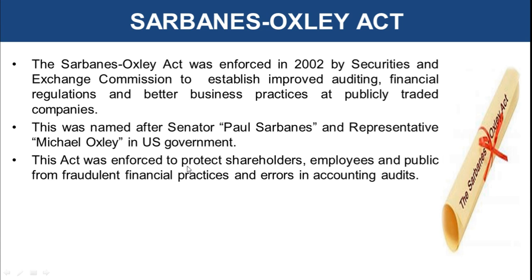This act was enforced to protect shareholders, employees, and the public from fraudulent financial practices and errors in accounting and audit. New rules for accountants, auditors, and corporate officers were created. Corporate officers were made more responsible and accountable for whatever happens in their business. It also became a mandate to disclose to the public the financial and operational position of the business, and to keep external auditors to review statements. These reforms were implemented even if they were costlier than previous practices, in order to maintain efficiency in the market and keep up the trust of investors.